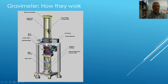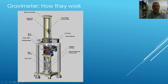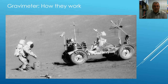Modern ones can measure gravity down to eight decimal places using all different methods. This one uses a falling cube method. So they can measure very accurately the acceleration due to gravity.